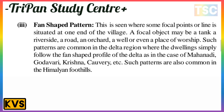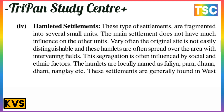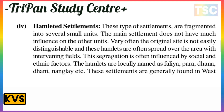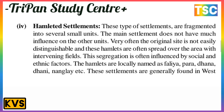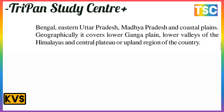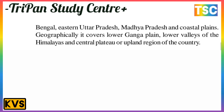Hamleted settlement: this type of settlement is fragmented into several small units. The main settlement does not have much influence on the other units, and often the original site is not easily identifiable. All these hamlets are often spread over an area with intervening fields. This segregation is often caused by social and ethnic factors. Hamlets are known by local names such as palli, para, panna, dhani, and naila. These settlements are generally found in West Bengal, eastern Uttar Pradesh, Madhya Pradesh, and the coastal plains. Geographically, they cover the lower Ganga plain, lower valleys of the Himalayas, central plateaus, and upland regions.